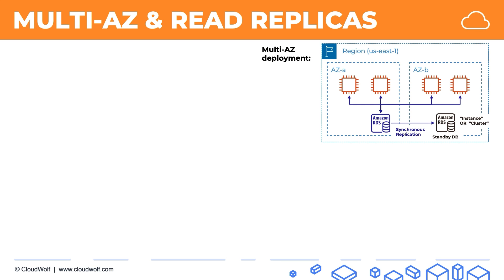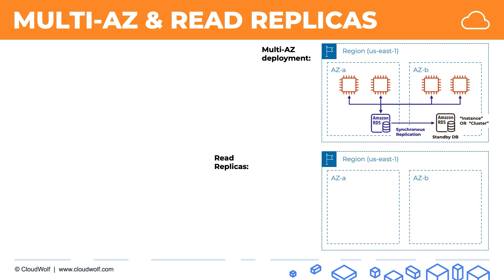The main purpose of multi-AZ deployment is high availability. Now let's talk about read replicas. With read replicas, we have a slightly different situation. Here again is our region with our RDS instance. You can set up up to five read replicas per database, and your data will be copied into these read replicas via asynchronous replication, so there is a slight delay in copying data to these databases. The benefit of this is you can scale — you're effectively scaling your database horizontally, but only for read operations.